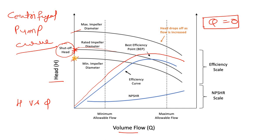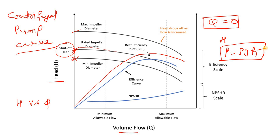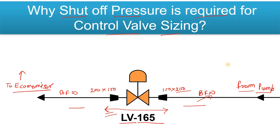Same for the minimum impeller diameter — the maximum head is achieved when Q is zero, meaning when there is no flow and the pump is running dry. At that point the head is maximum. Since pressure P equals ρgh, if the head is maximum then the pressure is also maximum. This is called the shutoff pressure.